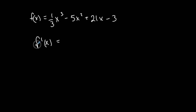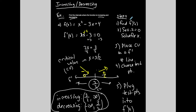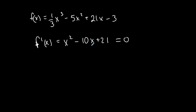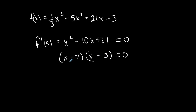Step one: find the first derivative. f prime of x — 3 times one third is 1, so x squared, minus 5 times 2 is 10x, plus 21. Set it equal to 0 and solve for x. This became a quadratic equation, so I need to factor. Factoring gives (x minus 7)(x minus 3): negative 7x minus 3x is negative 10x, and negative 7 times negative 3 is positive 21. Setting each factor equal to 0 gives x equals 7 and x equals 3 — two critical values.